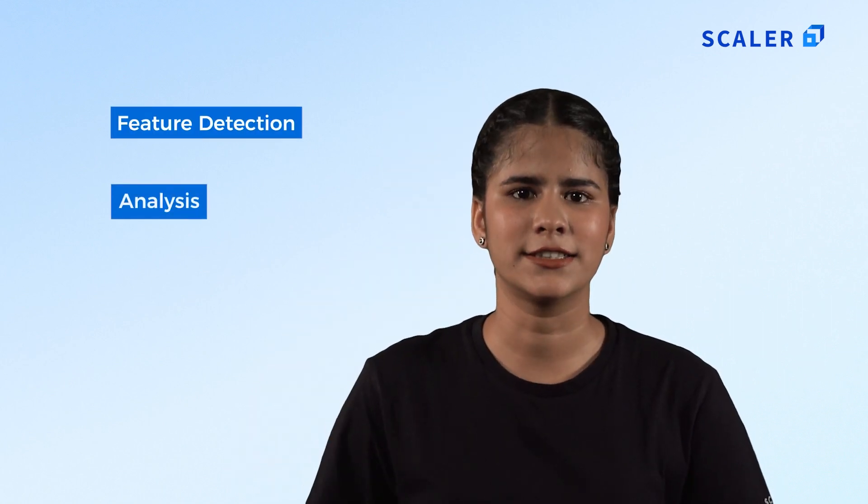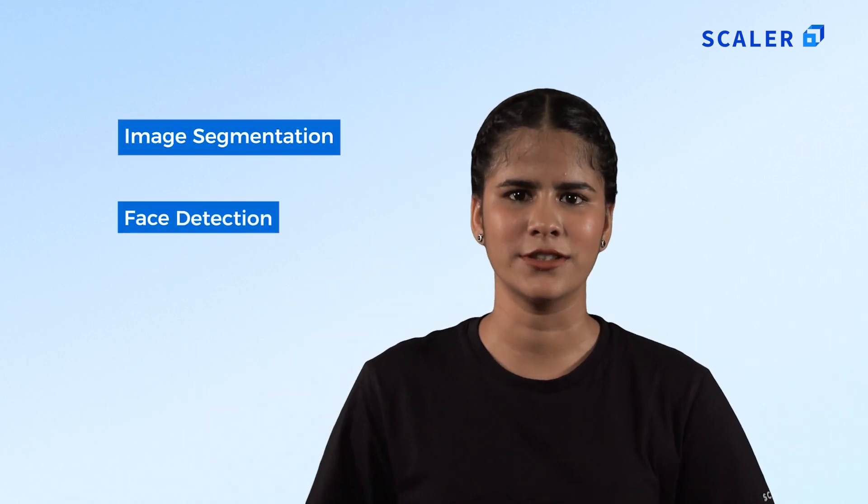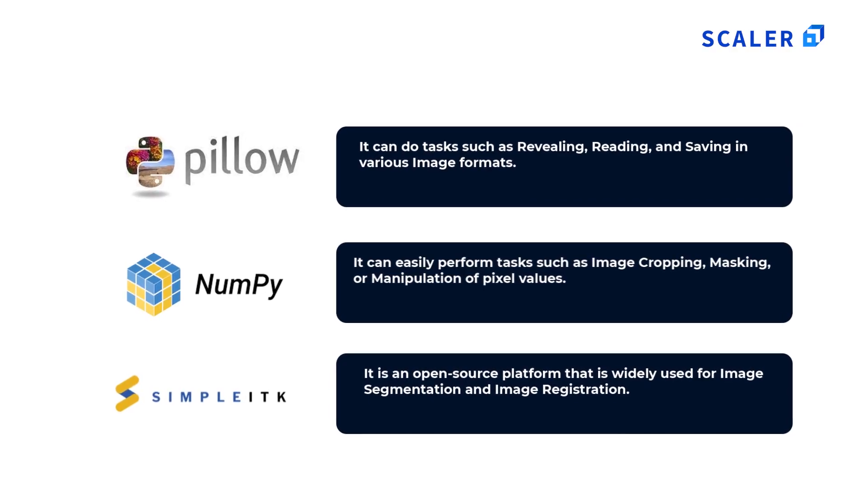Scikit-image is a Python-based library with some parts written in Cython for better performance. It includes algorithms for filtering, feature detection, analysis, segmentation, color space manipulation, and more. SciPy is popular for scientific and mathematical computation and can perform multi-dimensional image processing through its sub-module scipy.ndimage, supporting tasks such as image segmentation, face detection, and feature extraction.